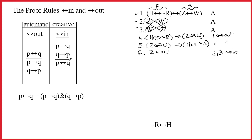This is a creative rule. You should never do a creative rule unless you know exactly why you're doing it. But we know exactly why we did this. We built line six so that we could do the arrow out on line five. And that's going to give us H double arrow tilde R. And that would be five, six, arrow out. We've now worked on five, and we could check that off.